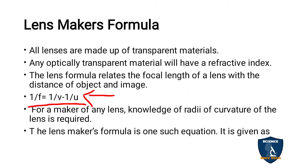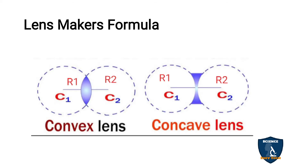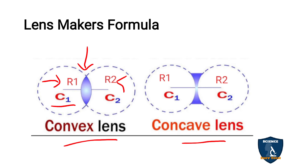For the Lensmaker's Formula, the lens is a transparent material. For any lens maker, there must be knowledge of the radii of curvature. You can see here a concave lens and a convex lens — each lens has a curvature. The radii of curvature are marked as R1 and R2 for both convex and concave lenses.